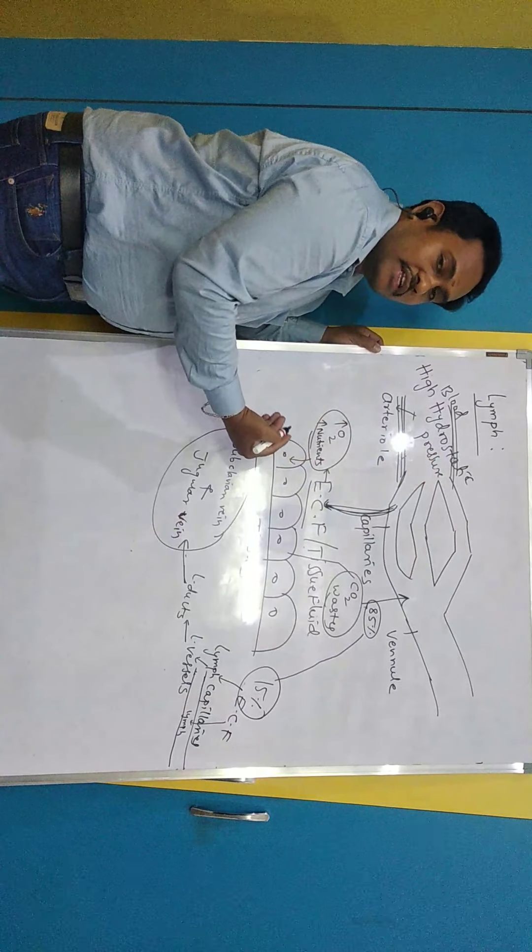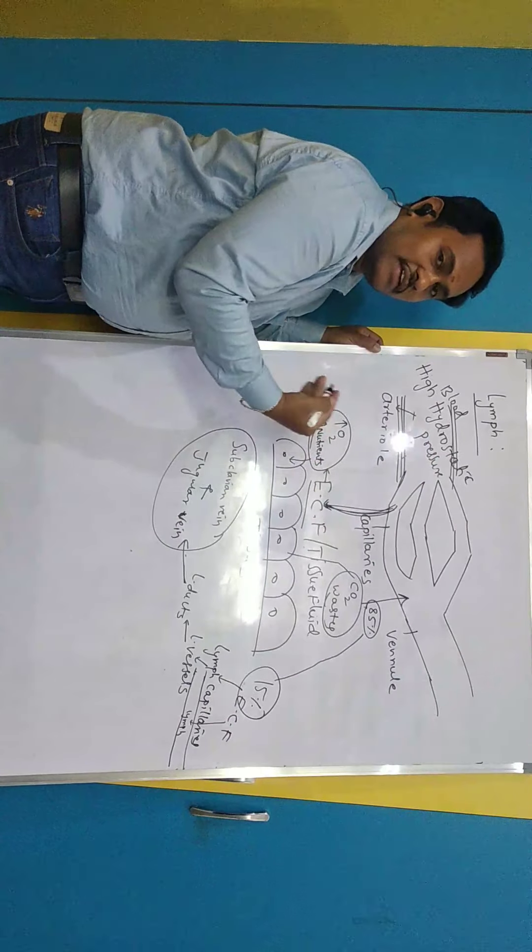This ECF brings all the nutrients and oxygen to the tissues. The ECF, which is rich in oxygen and nutrients, is used by the tissues. In return, tissues produce CO2 and nitrogenous waste. This waste goes back into the blood vessels near the venular end of capillaries. Fluid came out at the arterial end due to hydrostatic pressure and goes back at the venular end due to osmotic pressure.